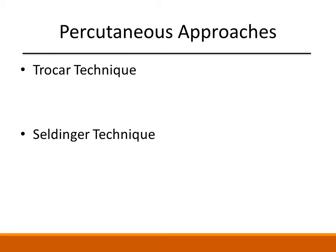In this video, we will be discussing how to perform percutaneous drainage of abnormal fluid collections via the trocar technique. This method involves direct puncture into a fluid collection by an over-the-needle catheter, followed by threading of the catheter into the collection. Another technique that is commonly used is the Seldinger technique, which involves direct puncture into a fluid collection by a sharp hollow needle, after which a guide wire is inserted through the needle, the needle is removed, and then a catheter is advanced over the guide wire into the fluid collection.